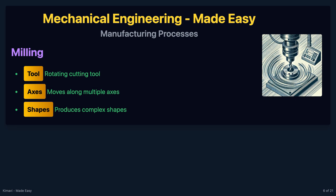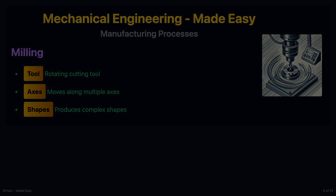Milling involves a rotating cutting tool that moves along multiple axes to remove material from the workpiece. Milling machines can produce complex shapes and features.